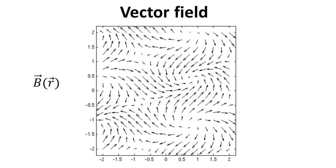I assume most of you already know what a vector field is. But for completeness, I shall briefly remind you that a vector field is a function that assigns a vector to each point in a region of space. Here, we shall denote this vector field as b. The vectors in a vector field can represent various physical quantities such as velocity, force, electric field, or magnetic field.